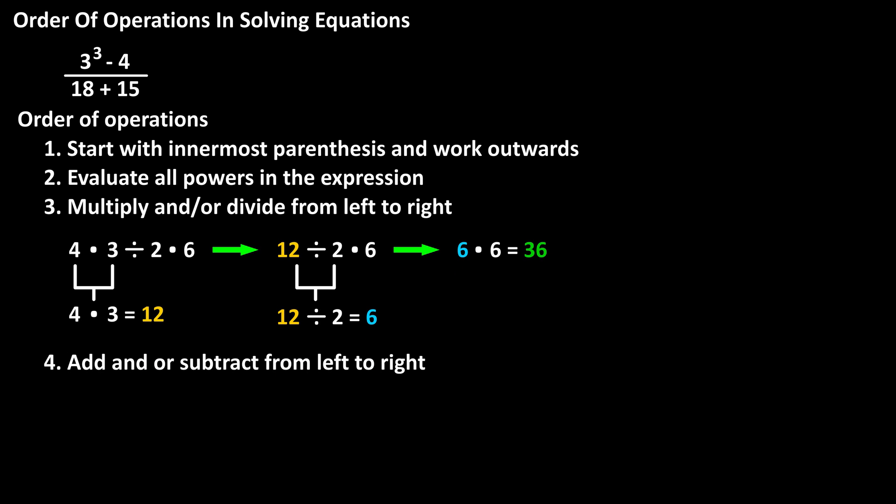And rule number 4 is to add and/or subtract from left to right. As an example, 18 plus 6 minus 4 minus 7. We go left to right. 18 plus 6 equals 24, and we have 24 minus 4 minus 7. Next is 24 minus 4, which equals 20. And we have 20 minus 7, which equals 13.